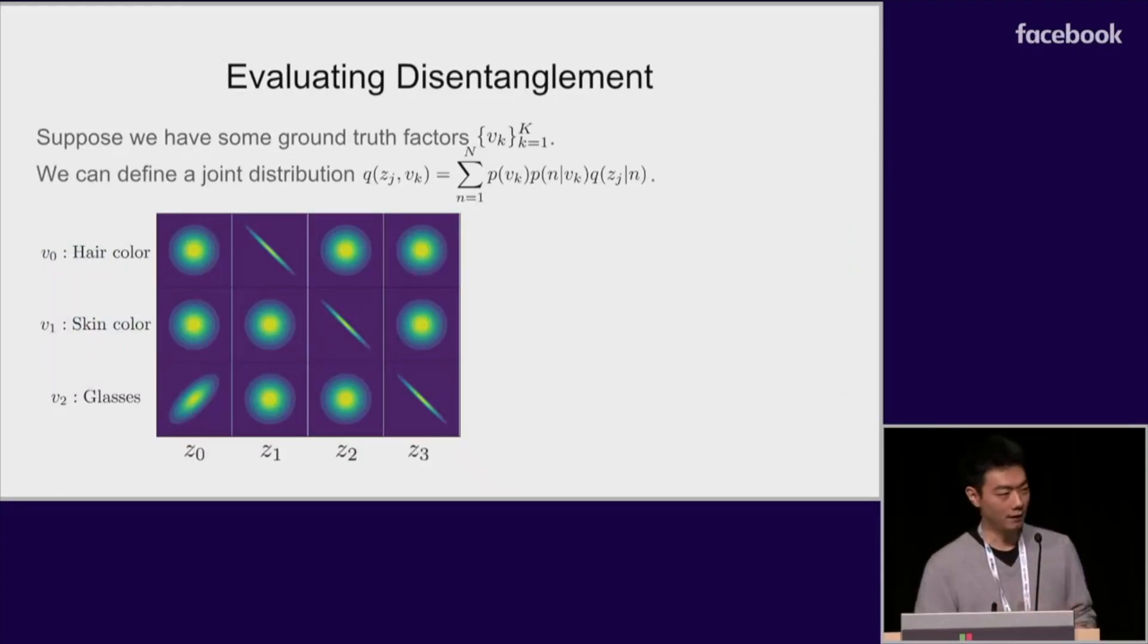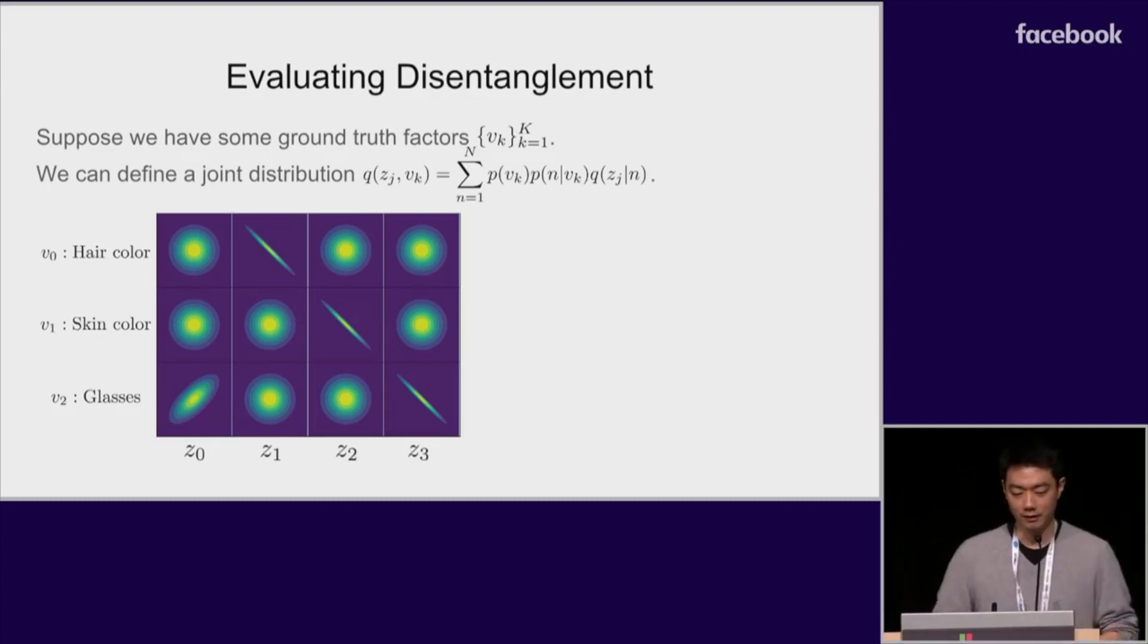Okay, so now that we have an algorithm, how will we evaluate the success of a disentangling algorithm? Previous works have designed classifier-based metrics, but here we instead focus purely on statistical quantities. Note that this evaluation is only done to test and compare unsupervised disentangling algorithms and is not used for training.